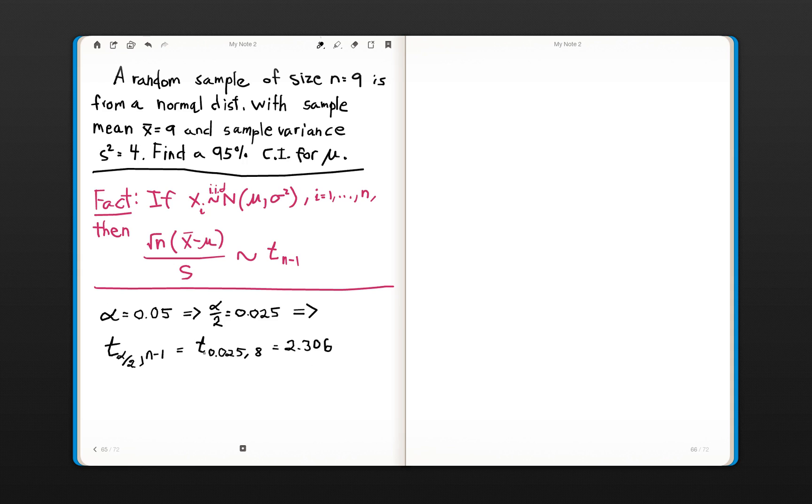So, we've determined what our t value is, it's 2.306. Now, let's stop for a second here and talk about this a little bit. If we were to use the z distribution...